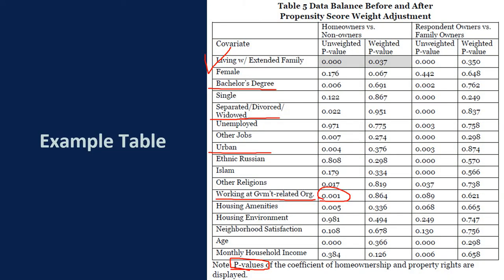What this table wants to convey is that now that selection bias is addressed with the propensity score weight, we can proceed to the substantial analysis without the necessity to control these covariates.